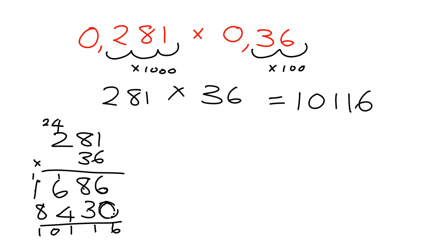Now is it the answer to the question I started with? No, it's not. The question I started with was 0.281 times 0.36. I cheated by dropping the commas, by multiplying by 1000 and multiplying by 100. So I must undo my cheat by reversing it. I need to reverse the first cheat by dividing by 1000. I must first go back 3 because I went forward 3, and then I must come back another 2 because I went forward by 2, and so I will get an answer of 0.10116.